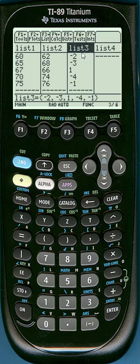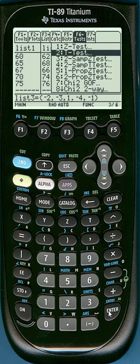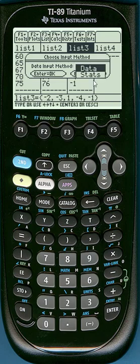Once we have our differences list set up, go to F6 for tests by clicking second and F1, and we're going to run a t-test. We just have one list so this is a single list t-test. We have our data in a list so we will use data. If instead we had summary statistics we would choose stats, but we have data.